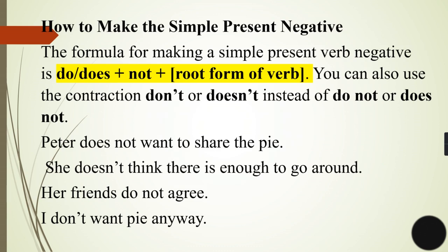How to make simple present negative? We have seen all positive sentences. Now let's see how to make negative sentences using 'not'. This also has a formula. The formula for making a simple present verb negative is do or does plus not plus root form of the verb. We use 'do' when the subject is plural and 'does' when the subject is singular, plus not plus root form of the verb. You can also use the contraction don't or doesn't instead of do not or does not. Normally in spoken English we use doesn't and don't. Examples: Peter does not want to share the pie. Here 'does' is used because Peter is a singular subject. She doesn't think there is enough to go around. Her friends do not agree. I don't want pie anyway.